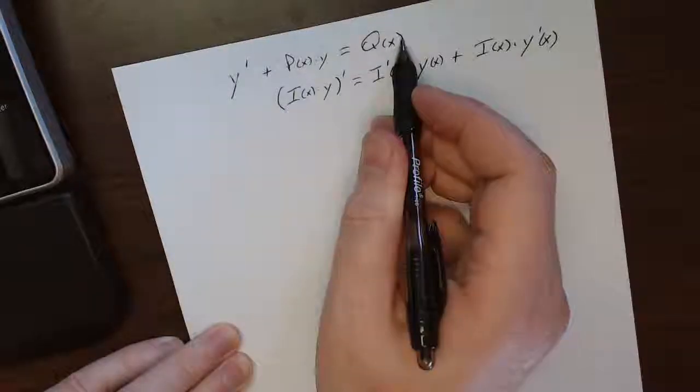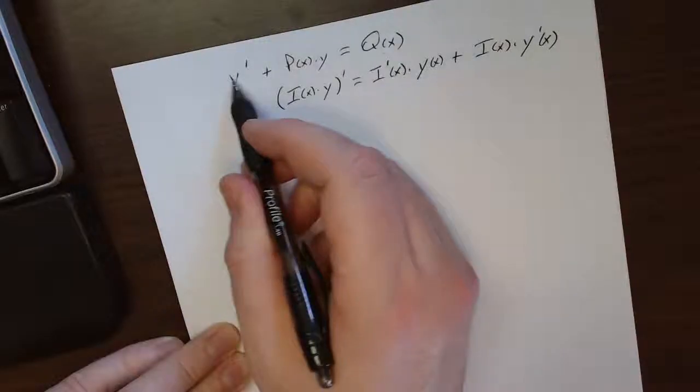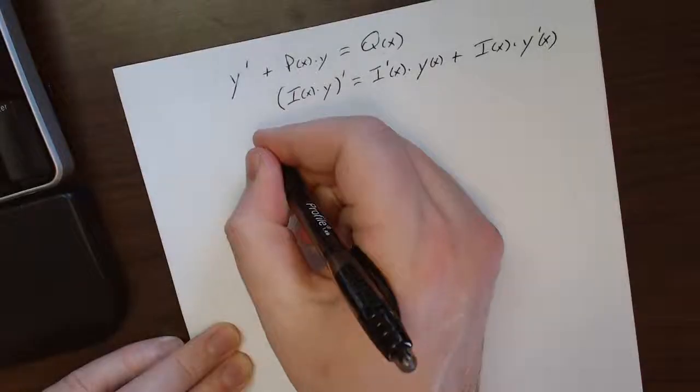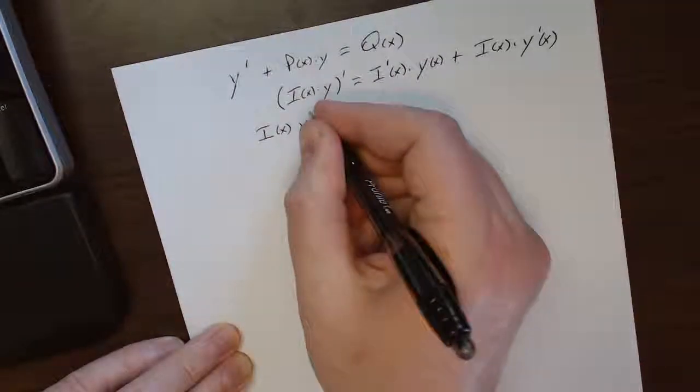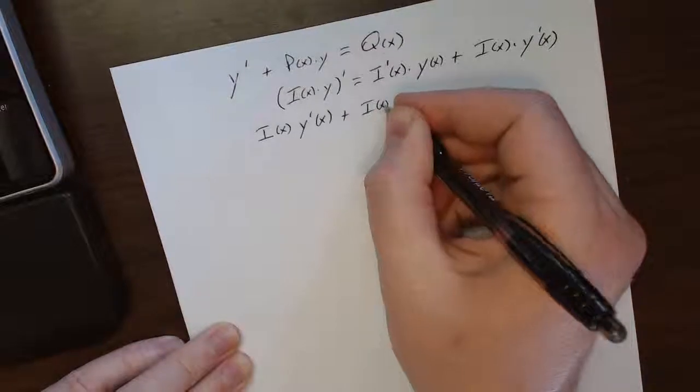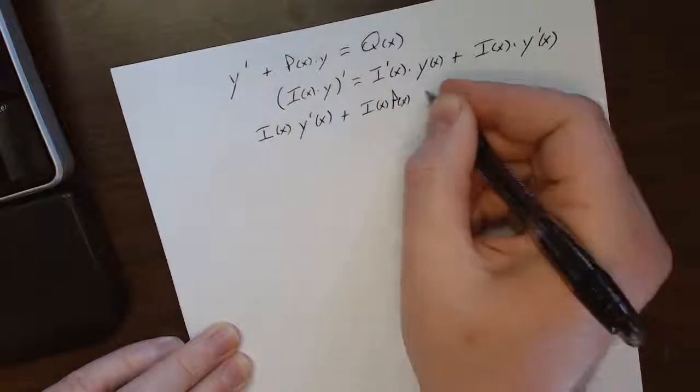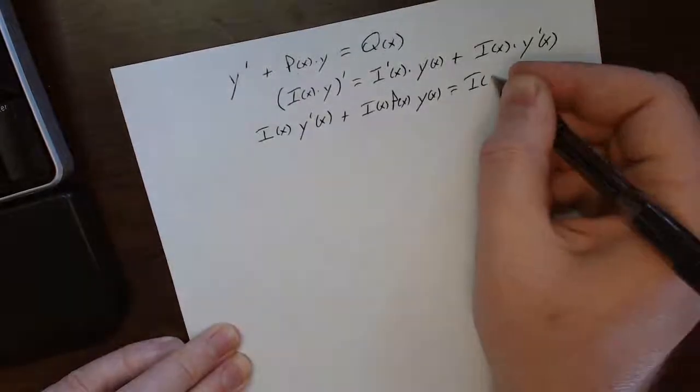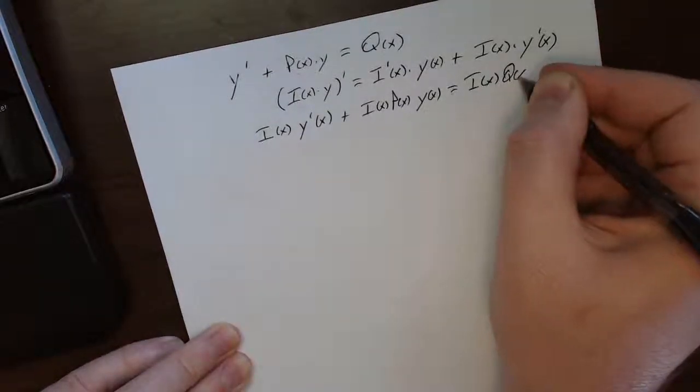Let's come up here and multiply both sides by a function i of x, whatever that may be. What do I get? I get i of x, y prime of x, plus i of x, p of x, y of x, everything's of x, i of x, q of x.